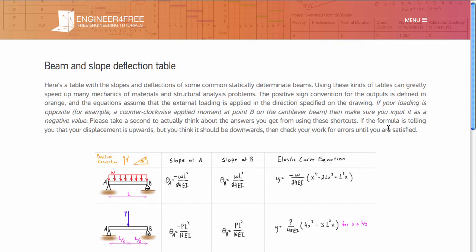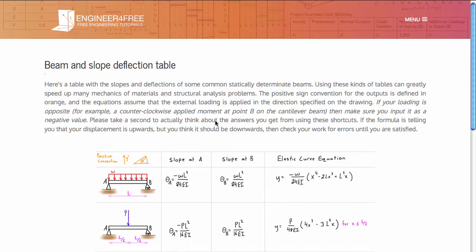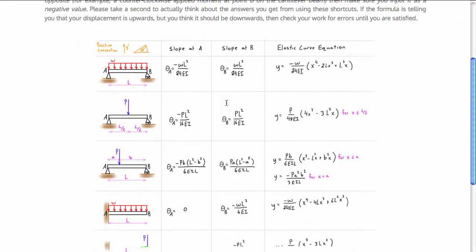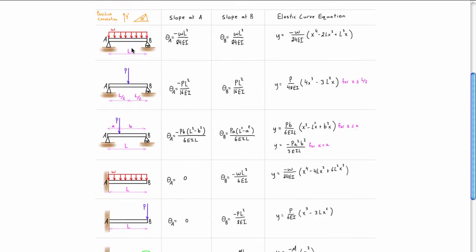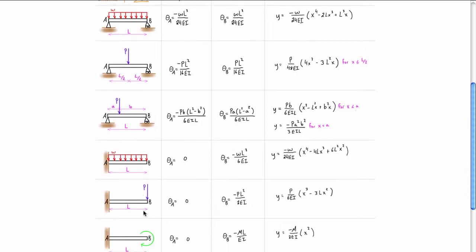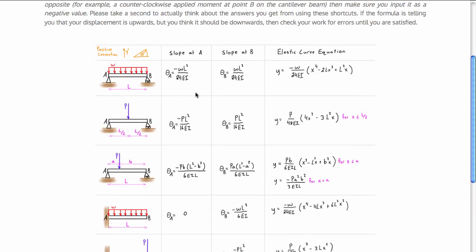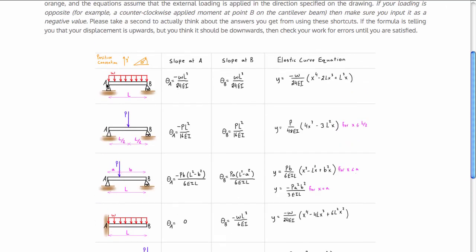Basically, this table here gives us for various simply supported beams—you guys can pause and read this if you want, I'm not going to read it out to you right now, but there's some good stuff in there. We have for various statically determinate beams with one type of loading, so like distributed load the whole way across or point load or even there's one down here for the moment. We've got a table here that's going to give us the slope at A, the slope at B, and the elastic curve equation.